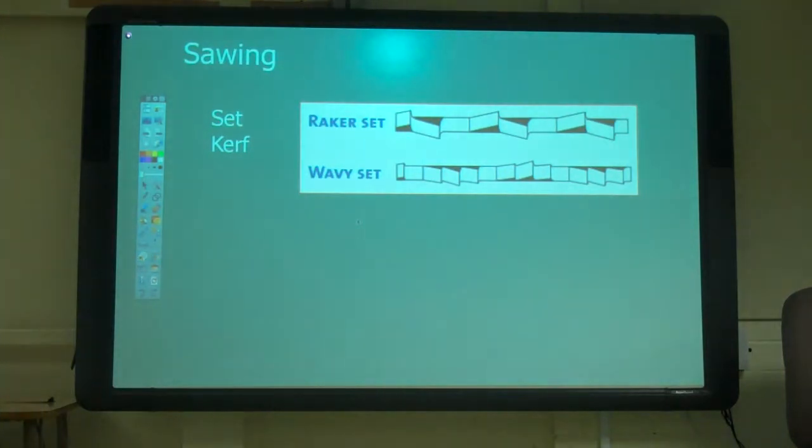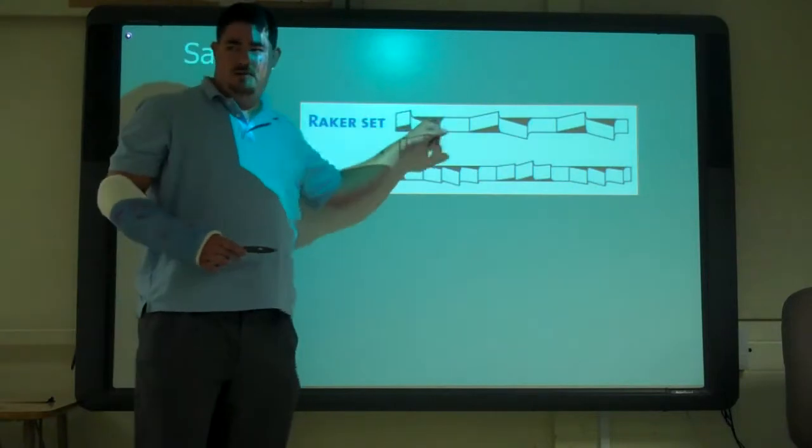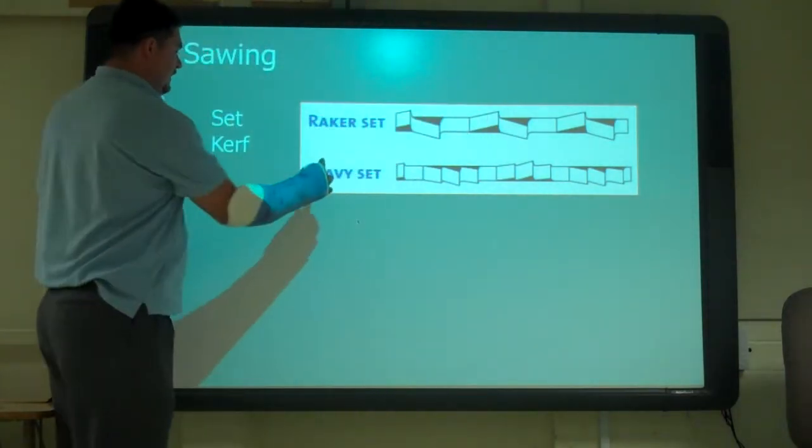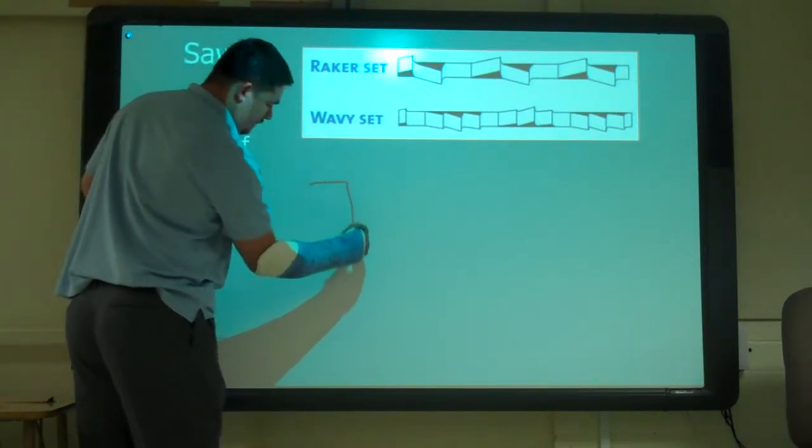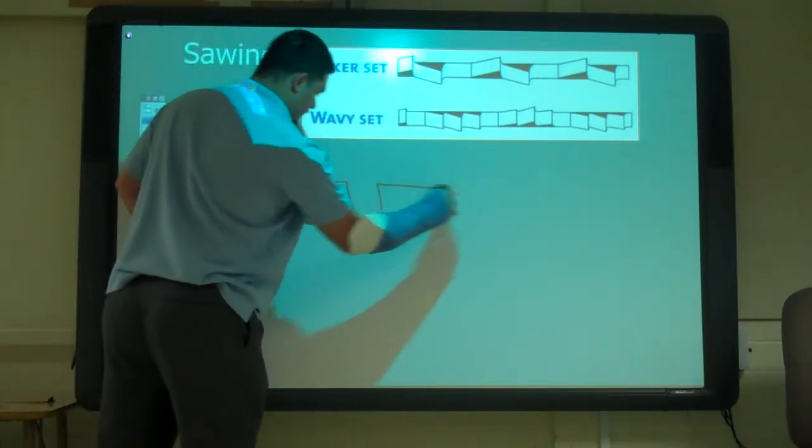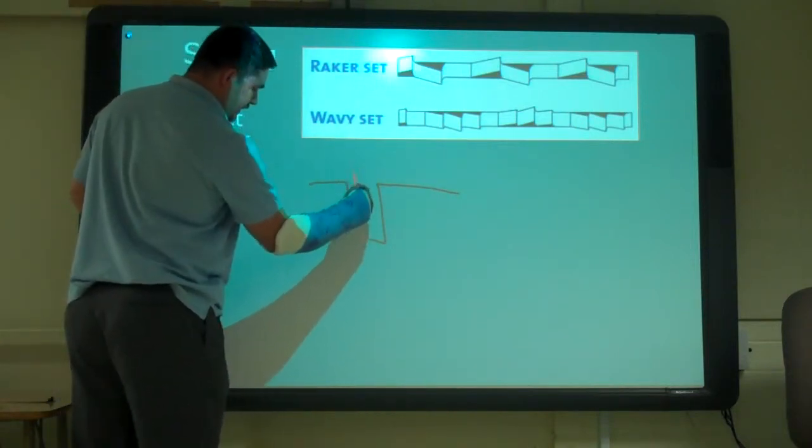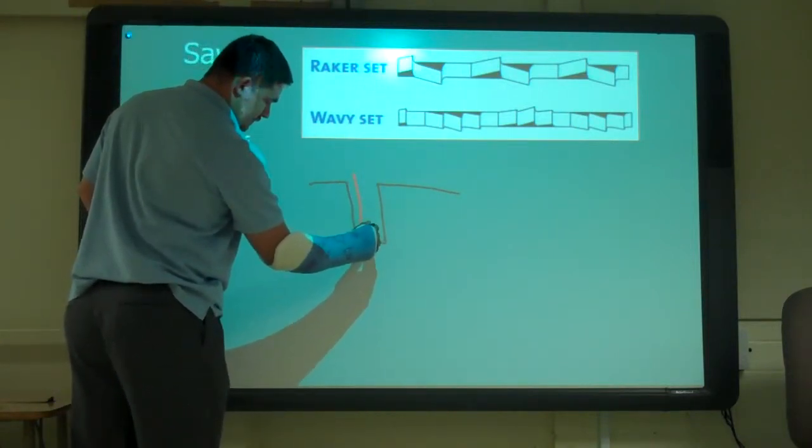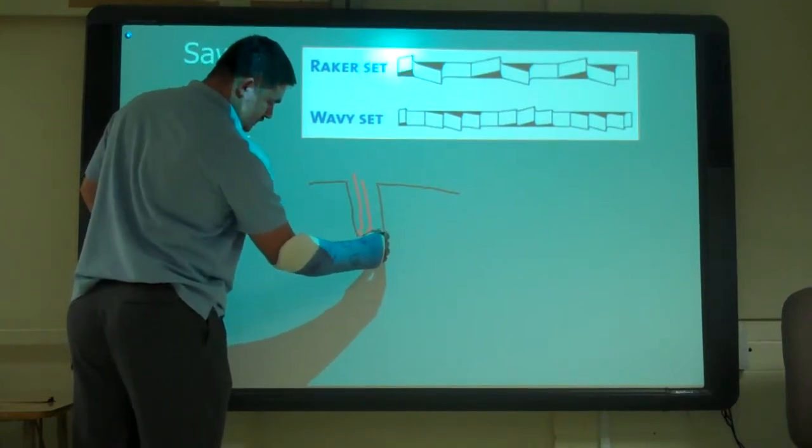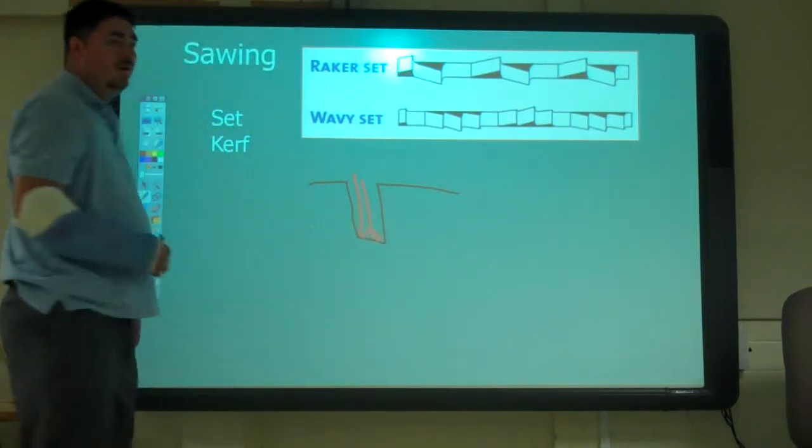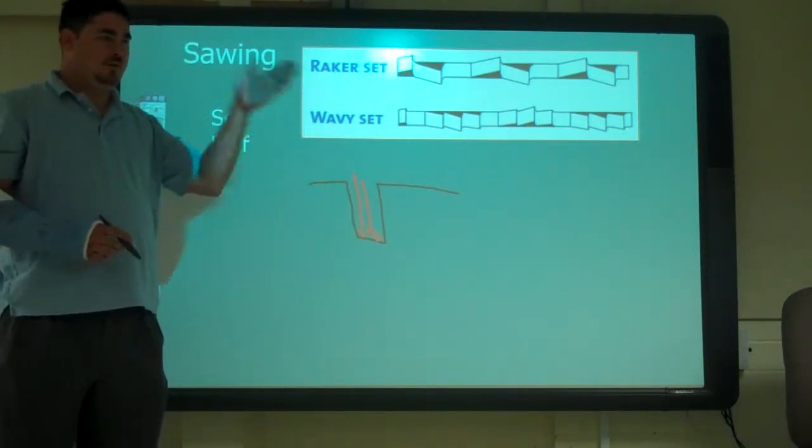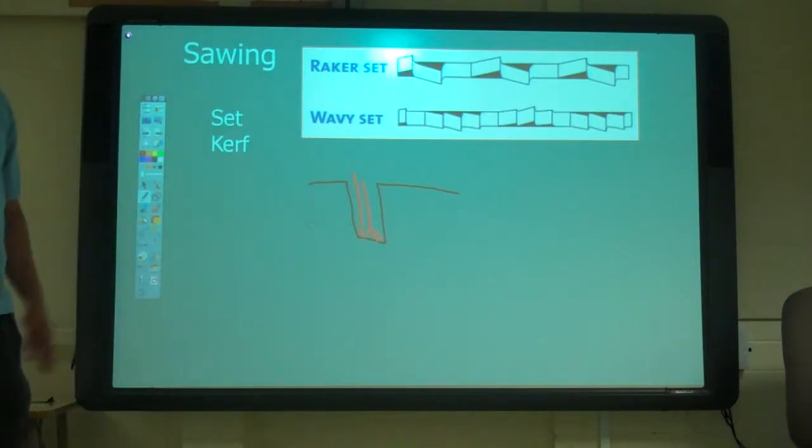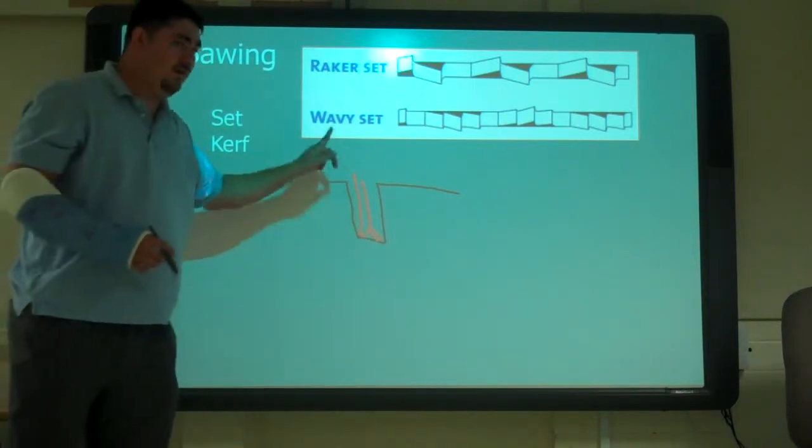So why do you think we do a set? To remove the material. Yeah, it gives it space for the material to get out. And also, it allows for the blade to move between the material. So here's our blade with the set. Now we've got some space on the sides of the blade so the blade doesn't get stuck. It helps the blade move through but it also helps get rid of all that extra material.